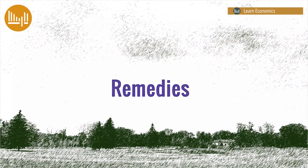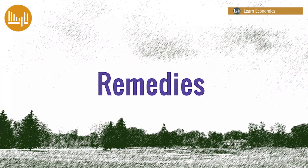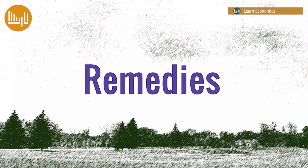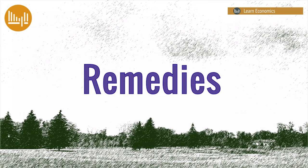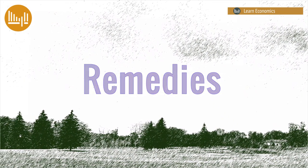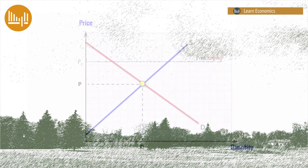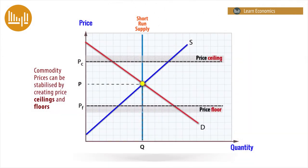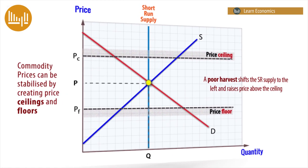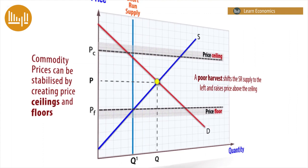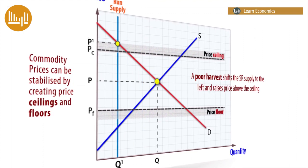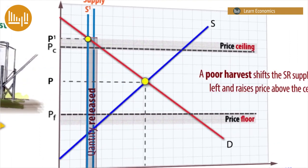There are several ways of dealing with the instability, including schemes available to producers and governments. To restrict price movements, price ceilings and floors can be set, and the quantity regulated via a buffer stock scheme. A very poor harvest will shift the short-run supply curve to the left, causing the price to rise above the ceiling. At this point, stocks are released from the buffer stock to push the price back down.